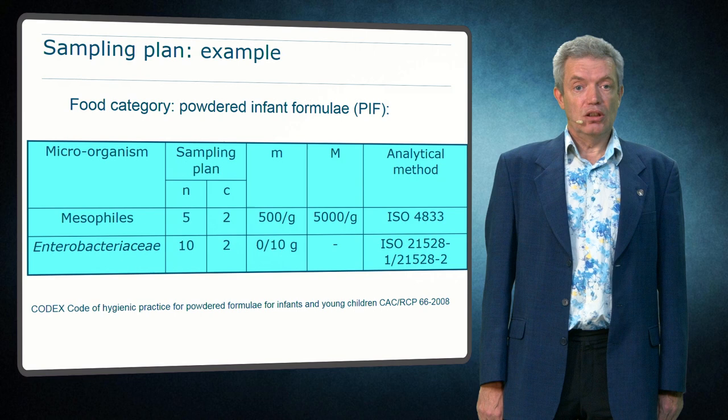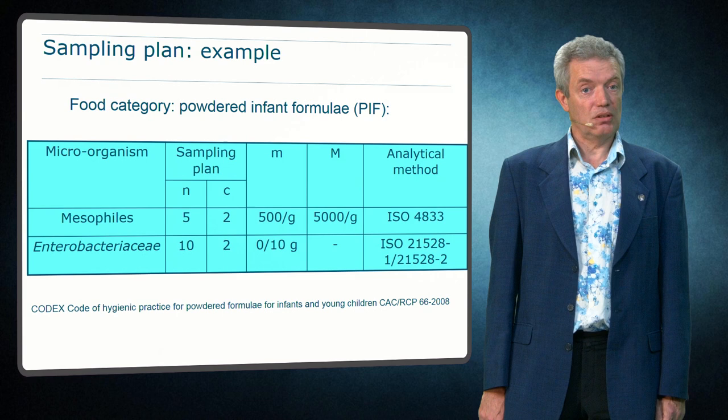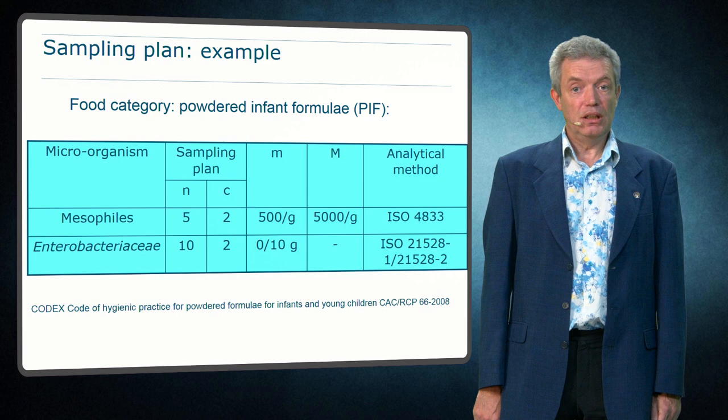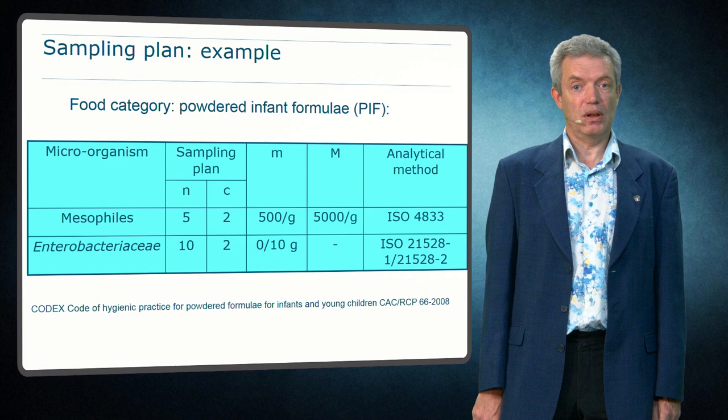In the Codex Hygiene Code for Powdered Infant Formula, hygiene criteria are also described for mesophiles and Enterobacteriaceae. For the Enterobacteriaceae the test remains a qualitative test, describing N, C, the sample weight and the analytical method. But C now is equal to two, allowing some samples to be positive. However, notice that for the mesophiles the test is quantitative, instead of a presence-absence test in a certain sample weight.